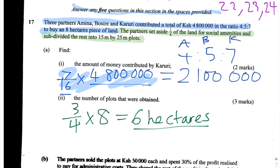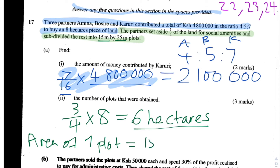For the 15 and 25 metre dimensions, we multiply 15 by 25 to find the area of each plot in metres squared. The area of one plot is equal to 15 times 25, and putting that into our calculator gives us 375 metres squared as the area of one plot.